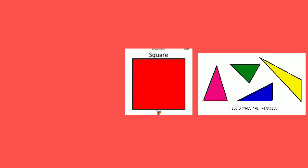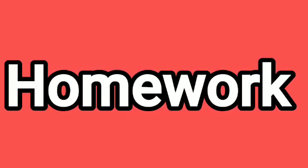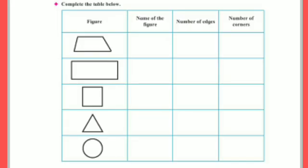What did we learn in this session? We learned about rectangles, squares, and triangles. Now take a homework. Complete the table below. In the first column there are figures, in the second column write the name of the figures.